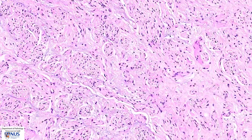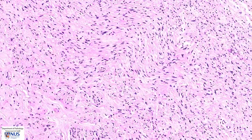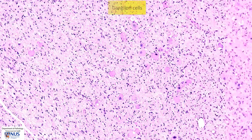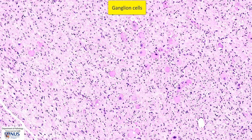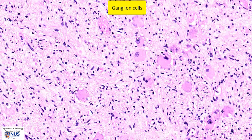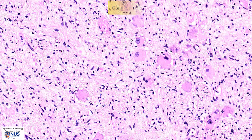Moving over to this area, we start to see these very large cells. These are ganglion cells, and they form the ganglion aspect of the ganglioneuroma. Ganglion cells are large polygonal cells with round nuclei, prominent nucleoli, and very abundant eosinophilic or pink cytoplasm.